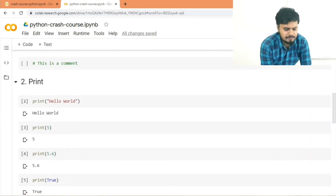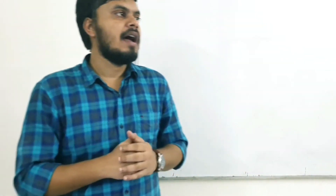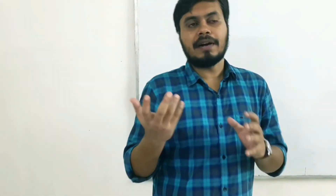To recap: the print statement can print all valid data types and variables. It can print multiple inputs together, and you can customize the separator between items using the 'sep' parameter. You can also change the automatic newline behavior by manipulating the 'end' parameter. Now let's move on to the next part where we're going to discuss data types.